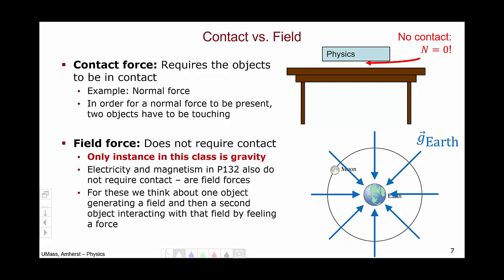The moon doesn't touch the earth, of course, but the moon does touch this invisible gravitational field generated by the earth. The moon interacts with that field by feeling a force towards the earth, keeping it in orbit.